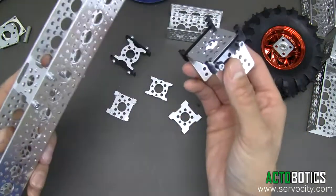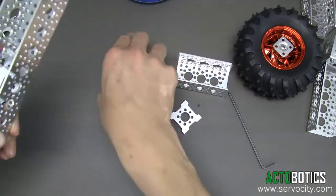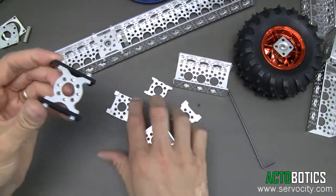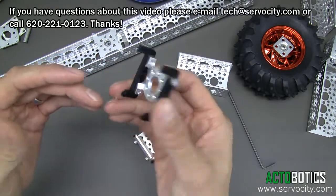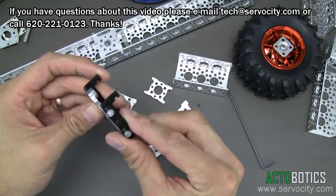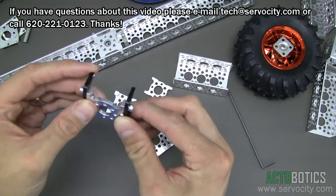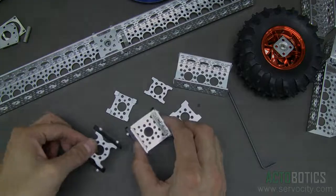If you have any questions, you can email tech@servocity.com. This is part number 585-560, Channel Slider F, sold in pairs. Really inexpensive, but it allows you to perform some really cool functions.